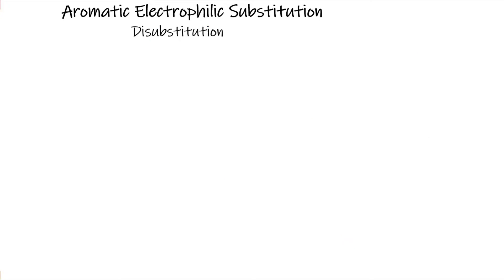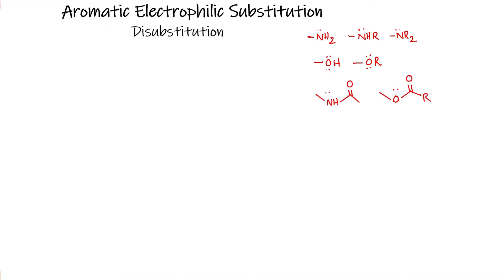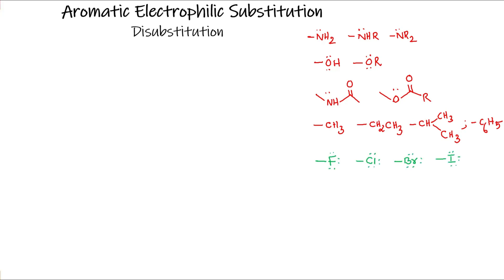Amines and substituted amines increase the electron density of the benzene ring by donating their lone pair of electrons, so they are highly activating groups. Hydroxy and methoxy groups are less activating than amino groups because oxygen is more electronegative than nitrogen, so electrons are not easily donated to the benzene ring. Amides and esters have further decreased activating nature because their lone pairs are involved in resonance with the nearby carbonyl group. Alkyl groups are also activating but do not have lone pairs; they increase the electron density of the benzene ring by positive inductive effect (+I effect). Halogens are deactivating groups which decrease the electron density in the benzene ring by their −I effect.